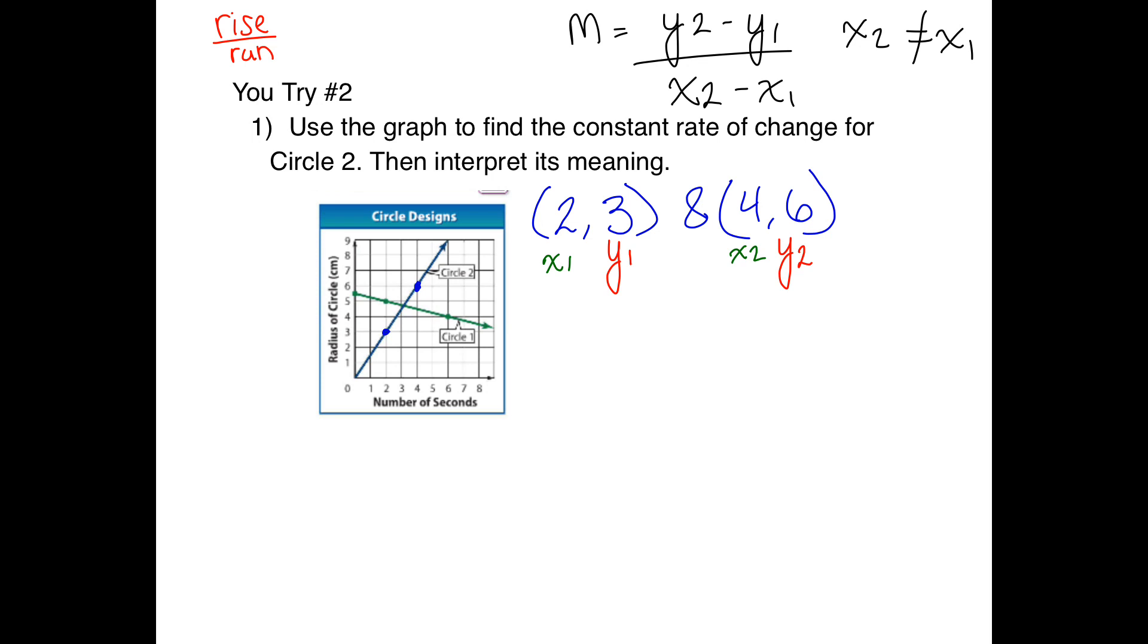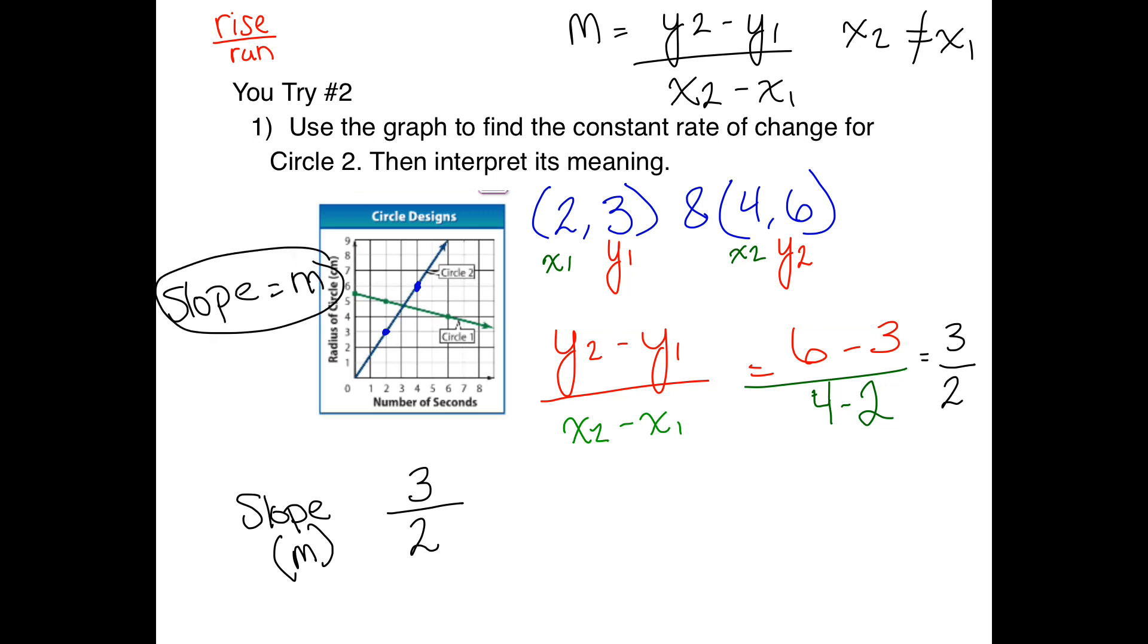I'm going to write my formula out because the more that I write the formula, the more I'm going to remember it. We're going to have 6 minus 3 over 4 minus 2. We can simplify these down - 6 minus 3 is 3, and 4 minus 2 is 2. So our rate of change, or our slope, which is represented as m, equals 3 over 2.